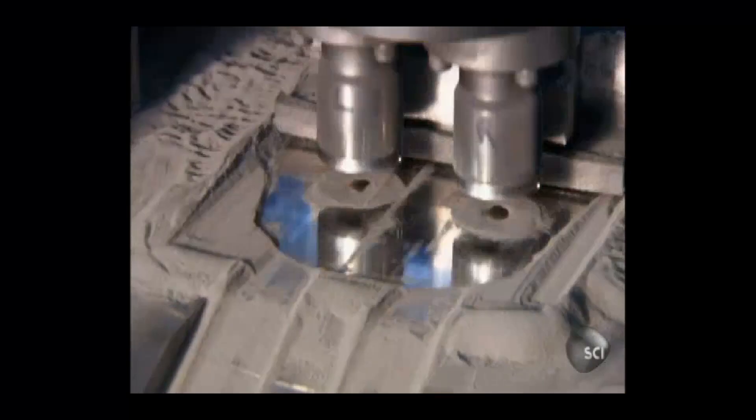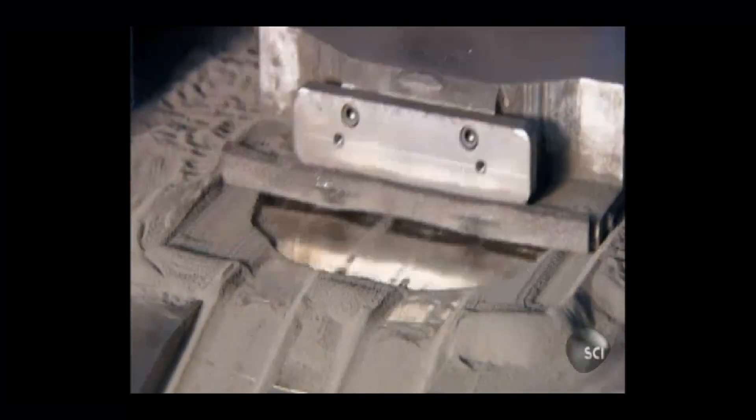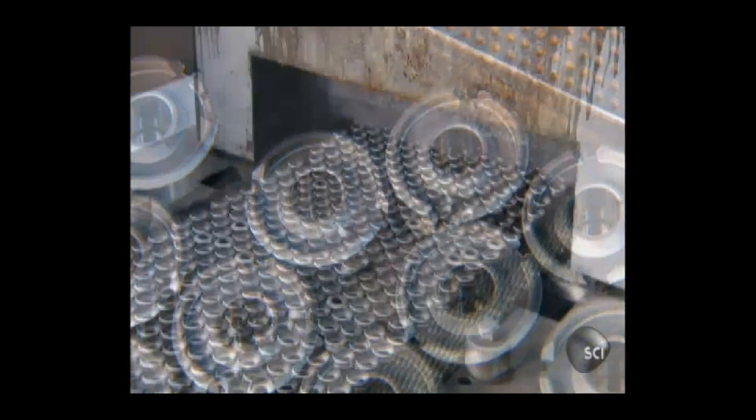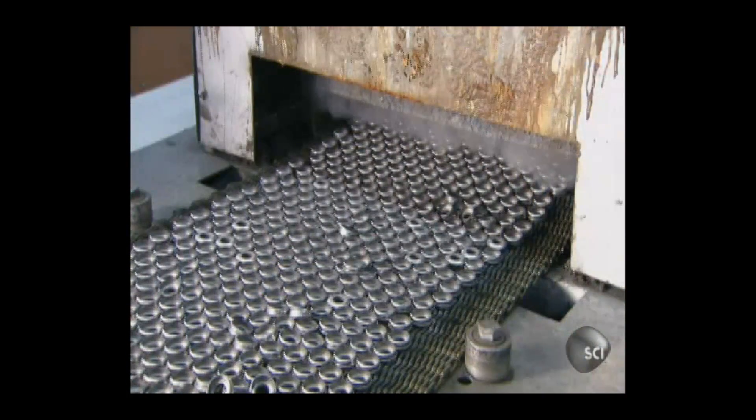Many components are made of powdered metal, mostly iron powder mixed with some graphite and copper. After a press compacts the powder in a die, a furnace fuses the particles.